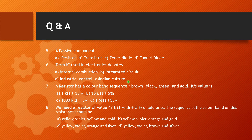Next, question number 7: A resistor has a color band sequence of brown, black, green, and gold. What is its value? We know the color code values: brown = 1, black = 0. The third color is the multiplier.